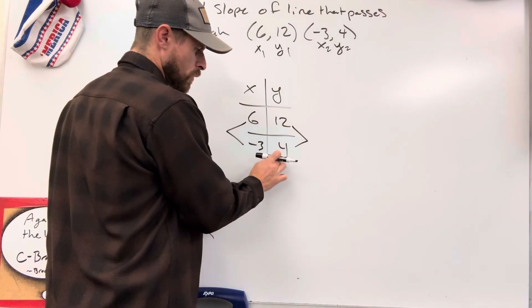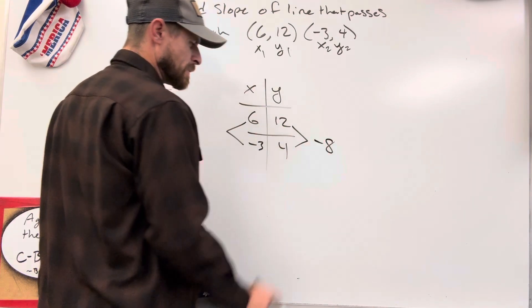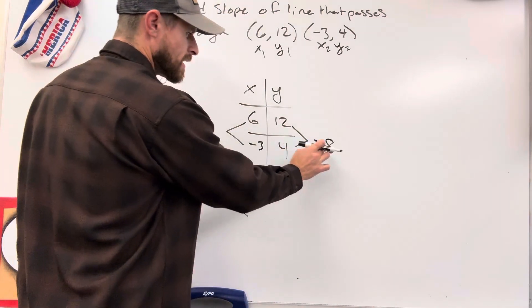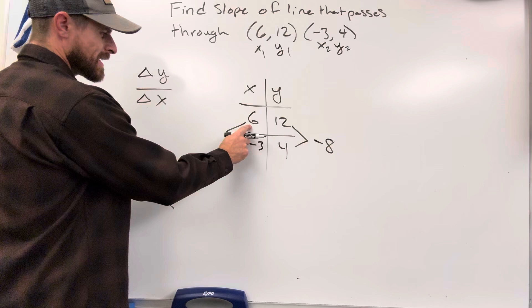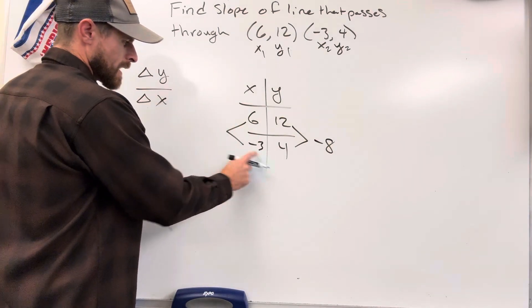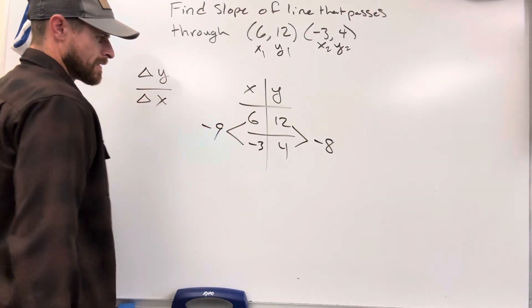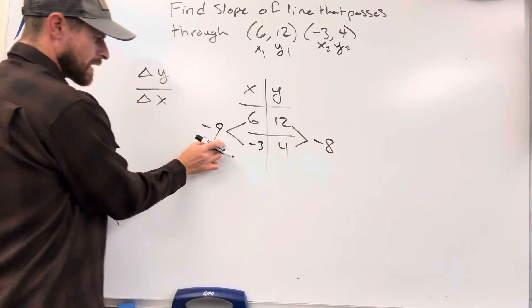So how did I go from 12 to 4? Well, I went down 8, silly Billy. So I just say minus 8 over here off to the side, and 6 all the way to negative 3. That means I've got to go down 9. So I've got a negative 8 here, a negative 9 there.